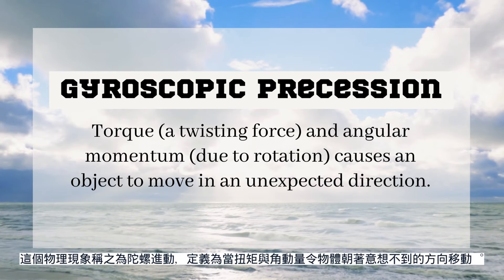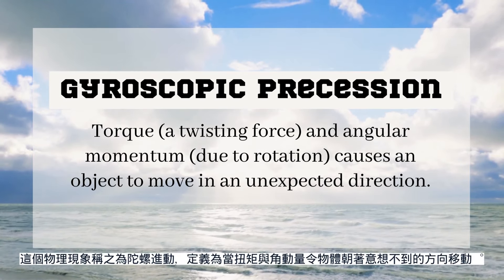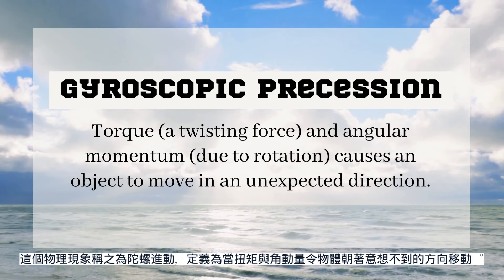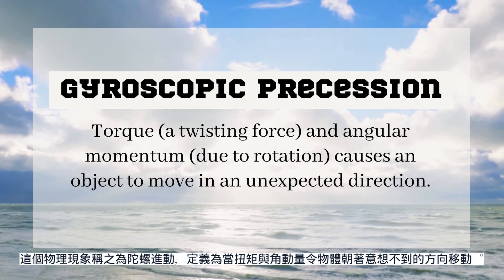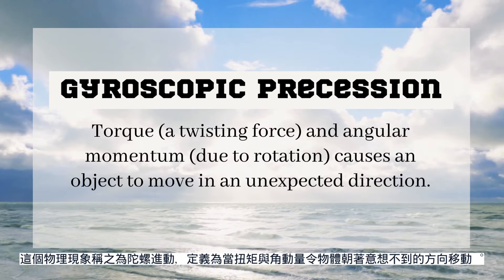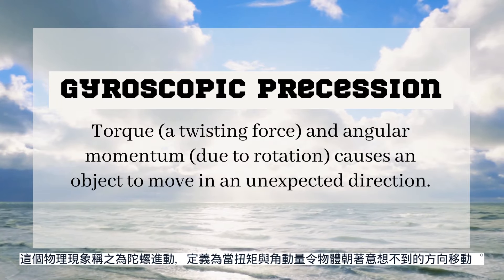This physics theory is known as gyroscopic precession, where torque paired with angular momentum causes objects to move in an unexpected direction.